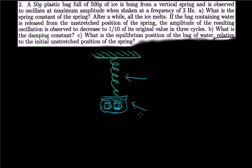After a while, if all the ice melts and the bag containing the water is released from the unstretched position, the amplitude is observed to decrease by one-tenth over three cycles. We have to find the damping constant and then find the equilibrium position of the bag of water relative to the initial unstretched position.